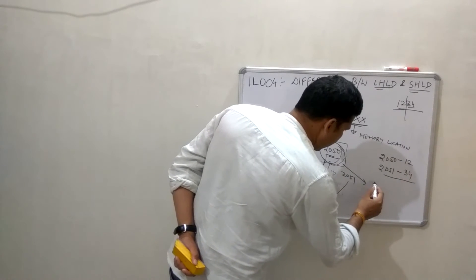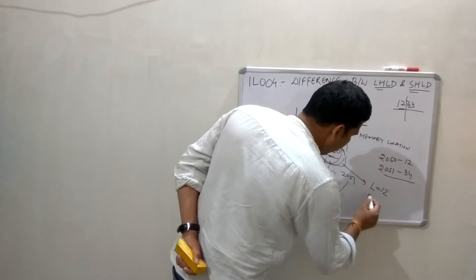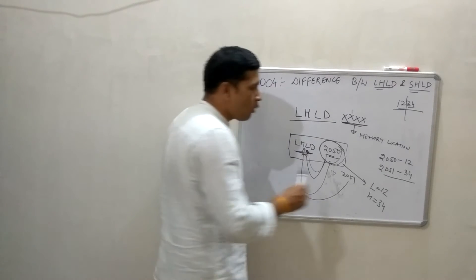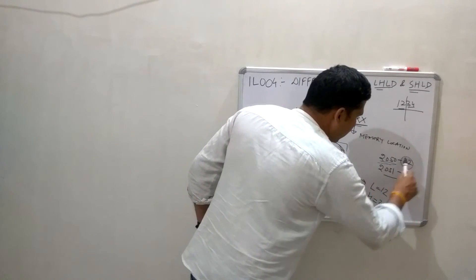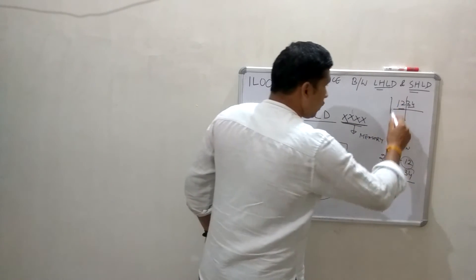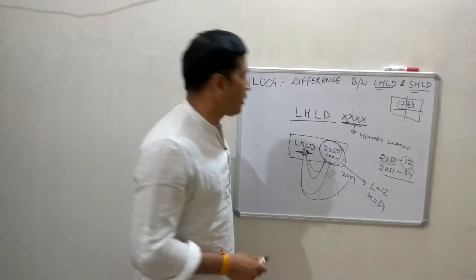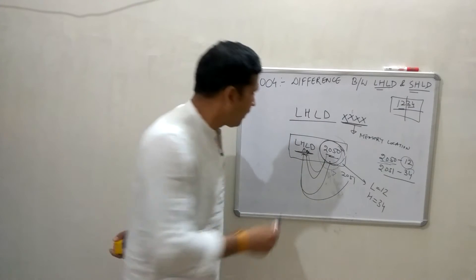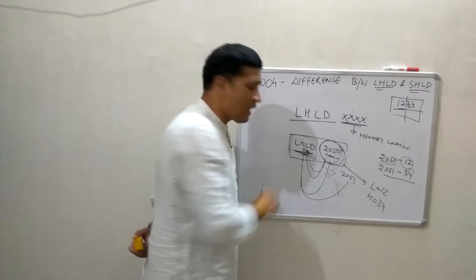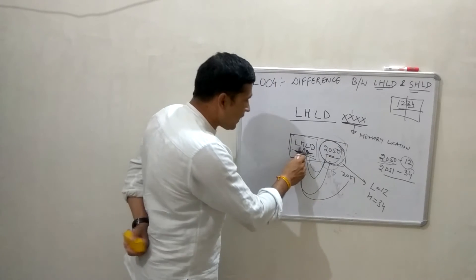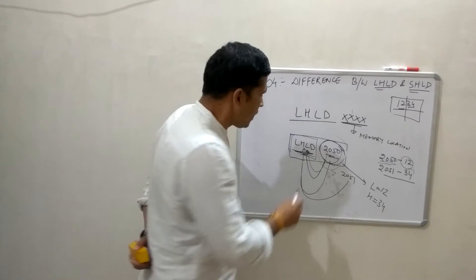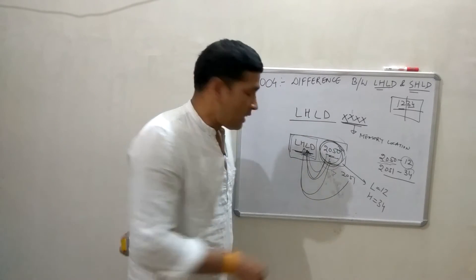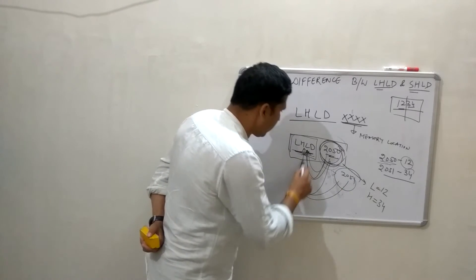So after this instruction, content of L will be 12 and H will be 34. Basically one memory location can store only 8-bit data, so to store 16-bit data you require 2 memory locations. When working with 2 memory locations at a time we use this instruction, LHLD. If I am writing LHLD 2050, it means you are going to store the content of this memory location into L and the content of the next memory location in H.